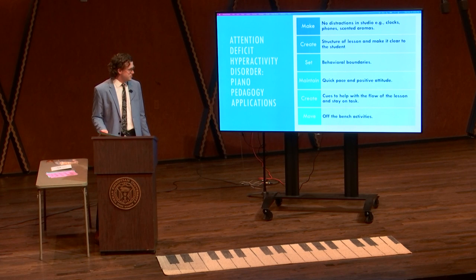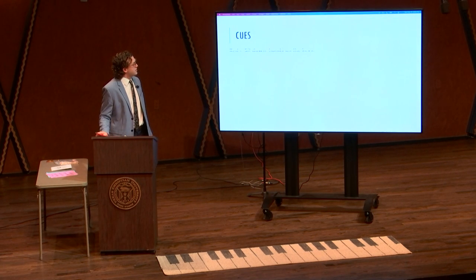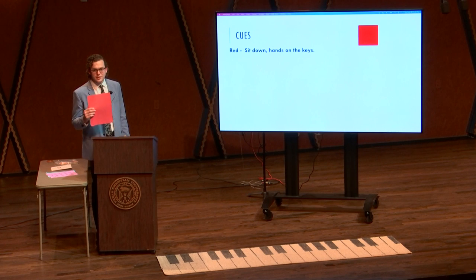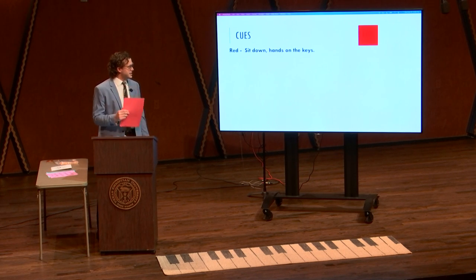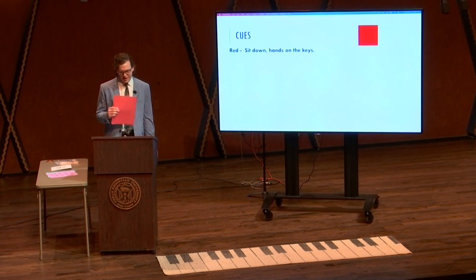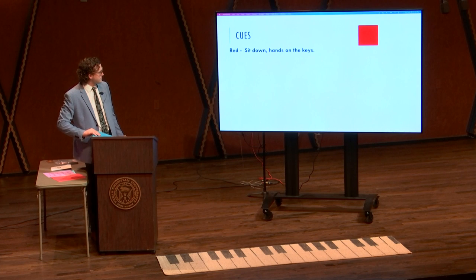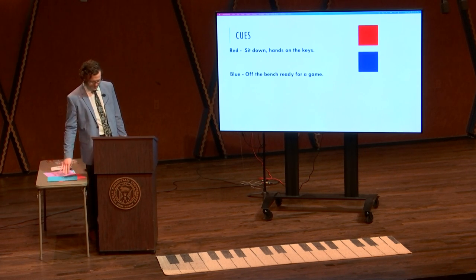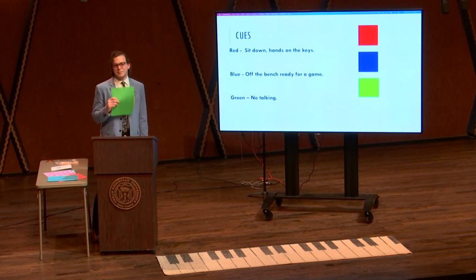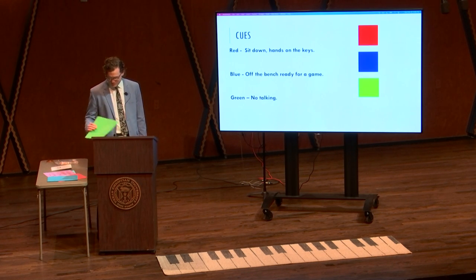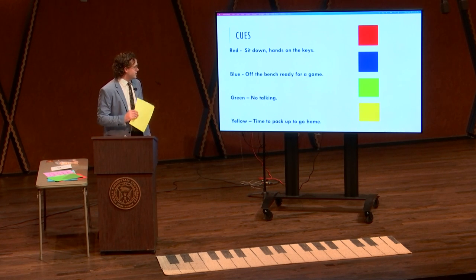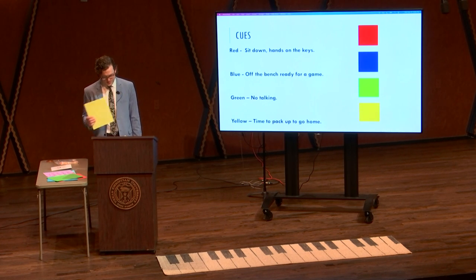An example of cues that could help in a lesson: you can have pieces of colored paper. Red could mean sit down and put their hands on the keys. Blue could mean be off the bench and ready for a game. Green can mean no talking. And yellow could mean time to pack up and go home.